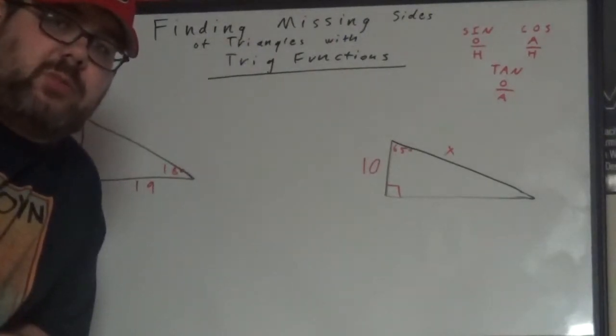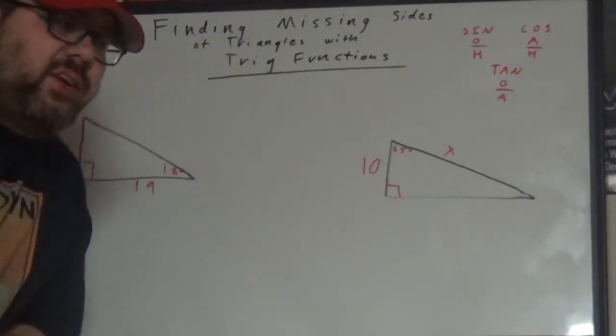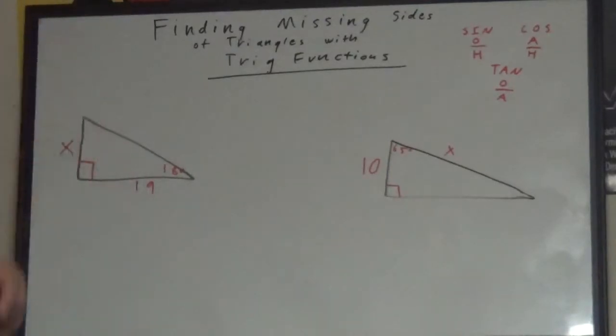Hey, this is Mr. Coker with Geometry Lesson 3.3, Finding Missing Sides of Right Triangles with Trig Functions.